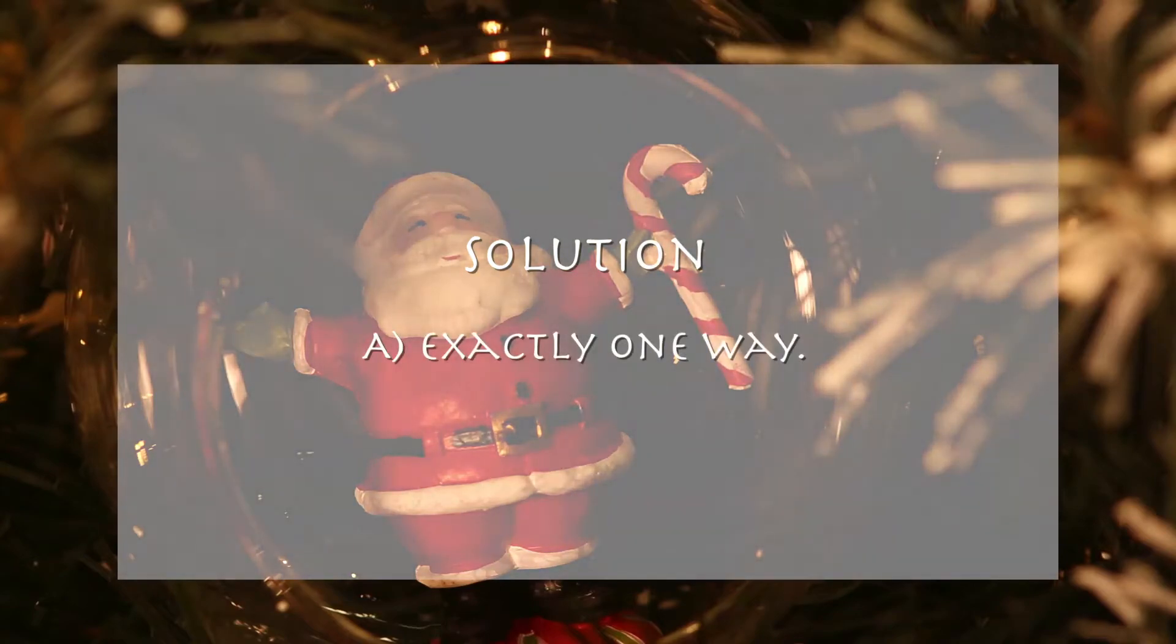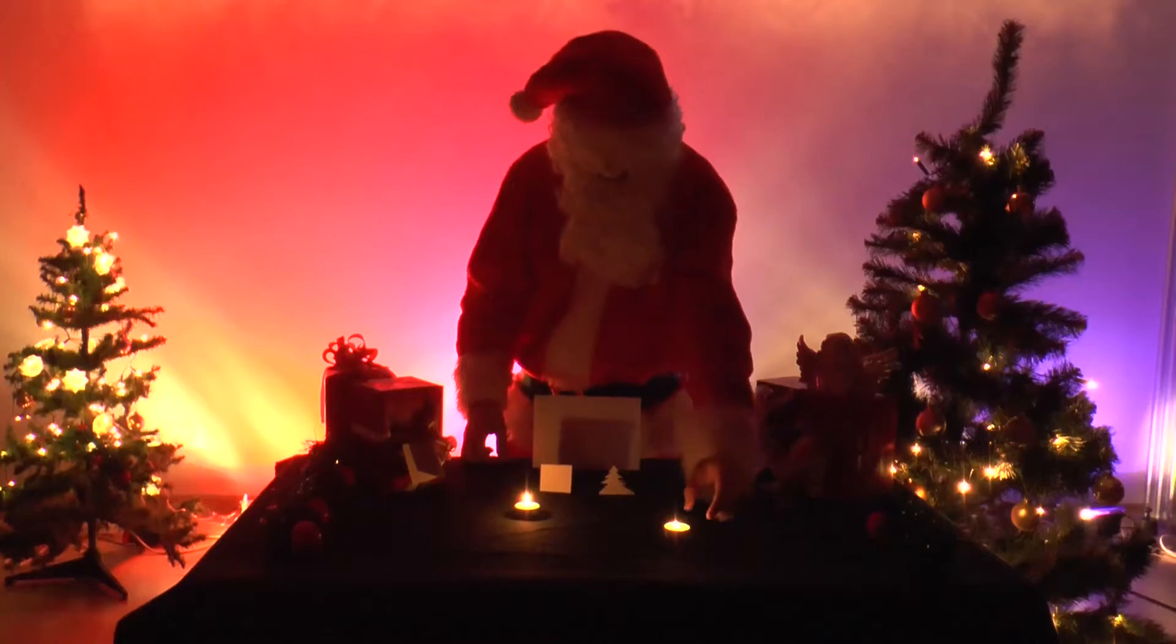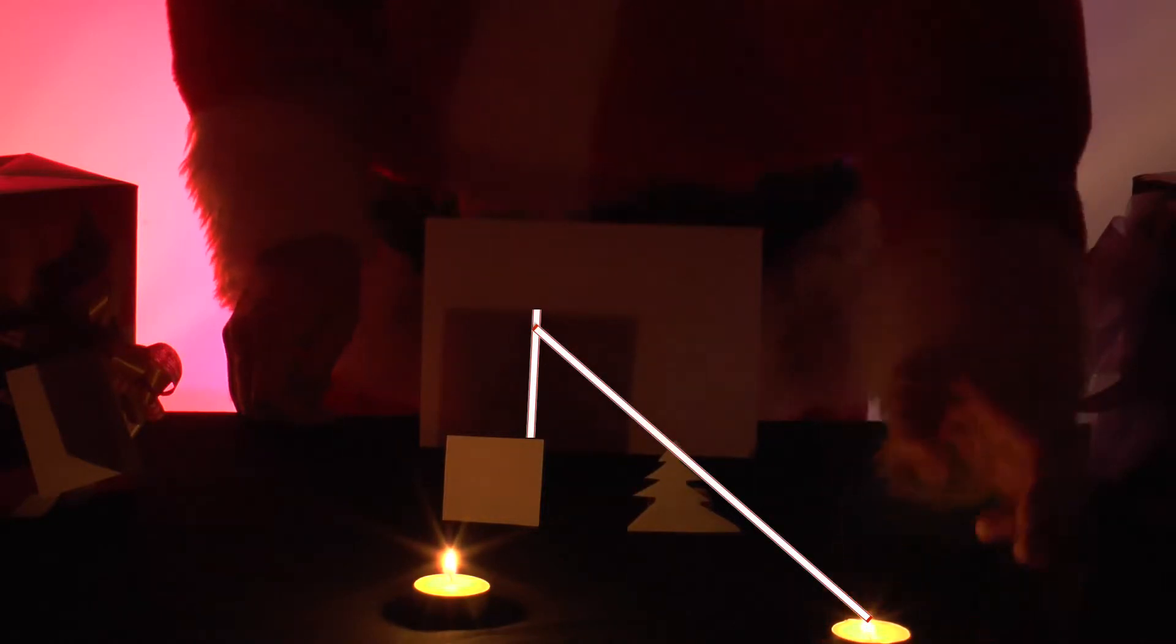The answer is exactly one way. When the Christmas card, the tree, and the first candle are at a fixed position, you can see a square shadow on the screen. If you align the center of the shadow and the center of the tree, you can position the second tea candle anywhere on that line and you will always obtain two shadows centered on each other.